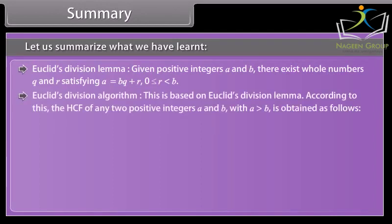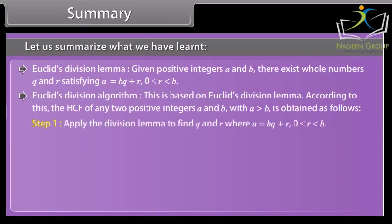Euclid's division algorithm: This is based on Euclid's division lemma. According to this, the HCF of any two positive integers A and B, with A is greater than B, is obtained as follows. Step 1: Apply the division lemma to find Q and R, where A equals BQ plus R, 0 is smaller than or equal to R, which is smaller than B. Step 2: If R equals 0, the HCF is B. If R is not equal to 0, apply Euclid's lemma to B and R.